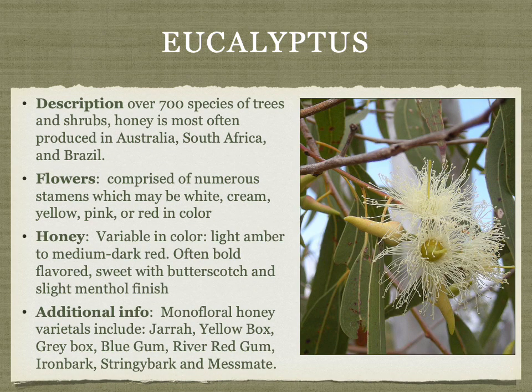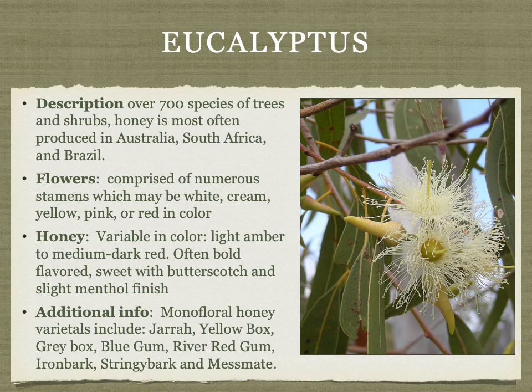Eucalyptus is a very large family of hundreds of species of trees and shrubs. The honey is most often produced in Australia, South Africa, and Brazil, with some from California. Due to the many different species, the honey is variable — ranging from light to dark, sometimes bold-flavored with butterscotch or menthol notes.